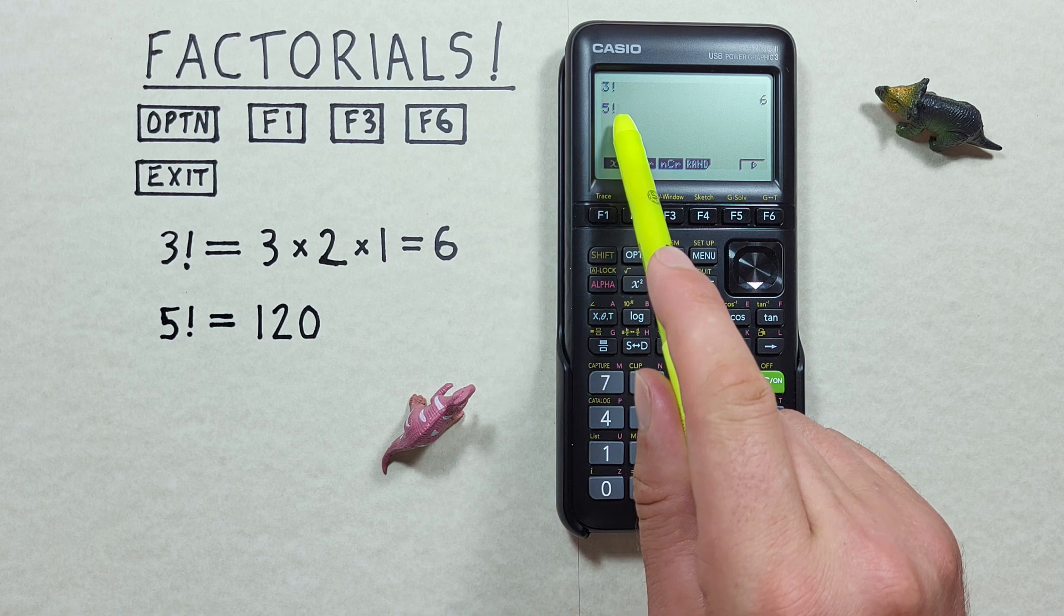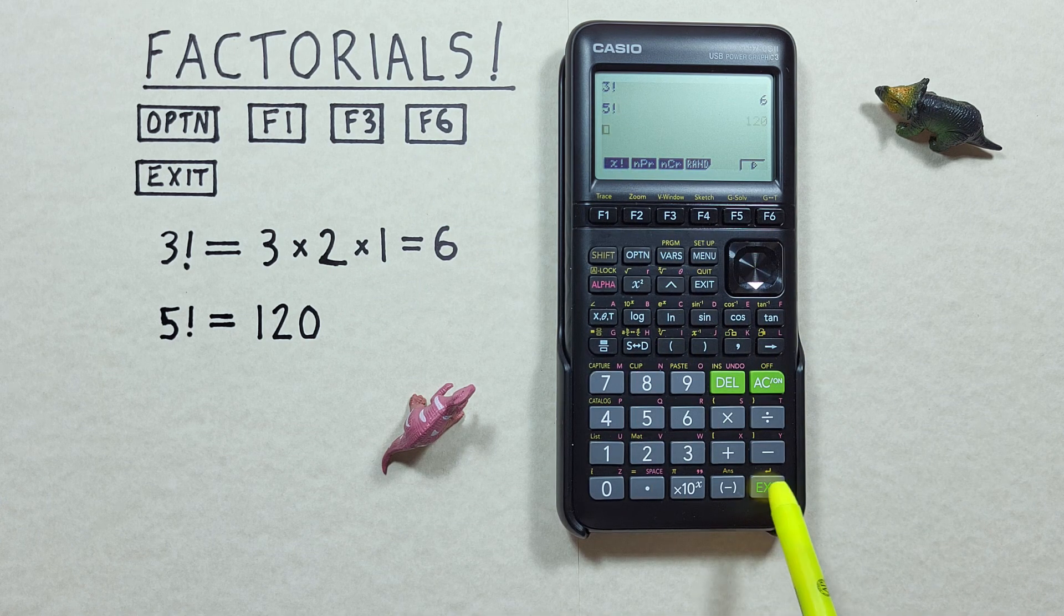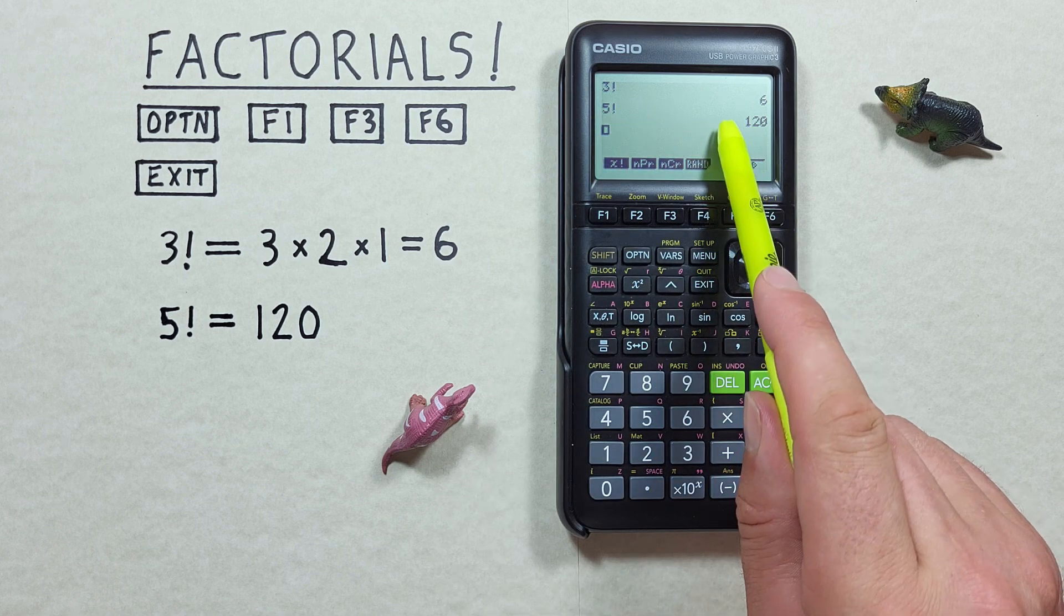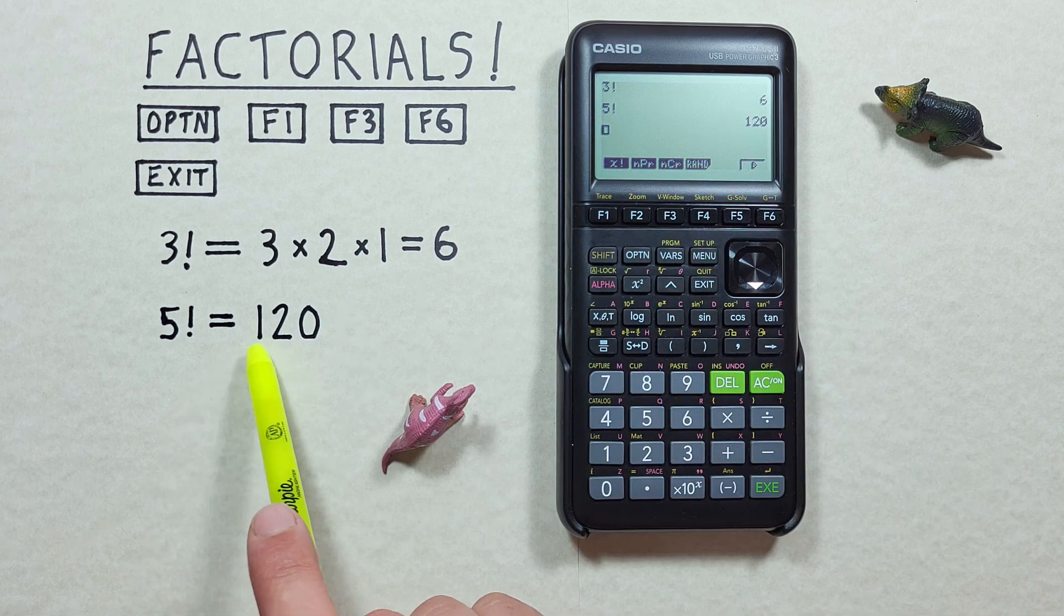Now we have 5 factorial and if we press EXE, 5 factorial we see we get 5 factorial is equal to 120 which is correct.